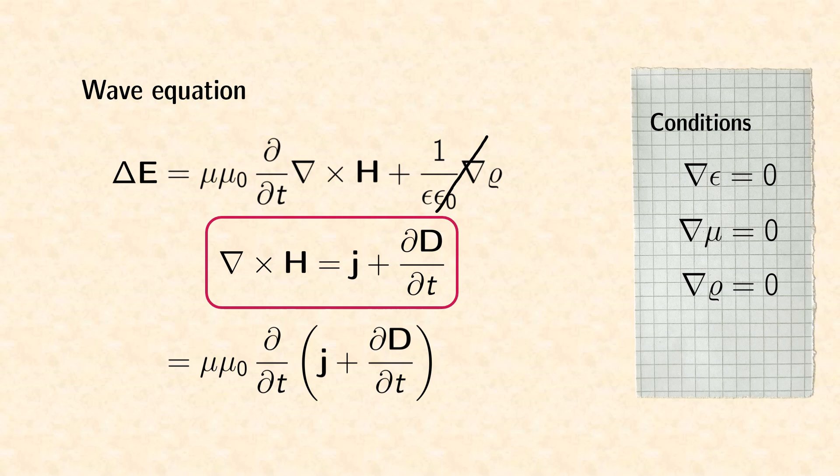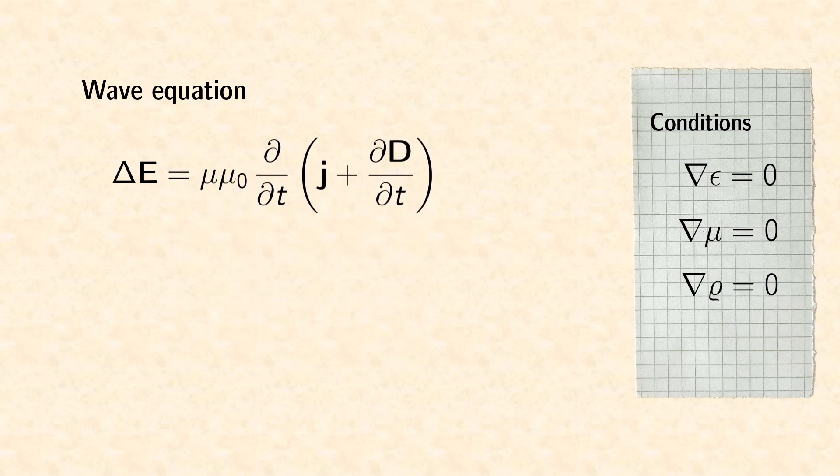This is the case for example in a dielectric material. This precondition also means that the current density in the first term must be zero too.